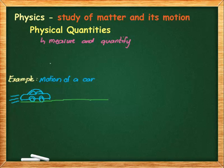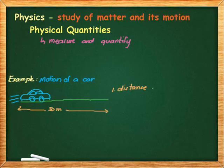Let's jump to an example. We have the motion of a car — this blue car is moving to the right. How are we going to describe the motion of this car? One thing I have in mind is distance. Let's say this car was able to cover 50 meters, so the distance here has a value of 50 meters.